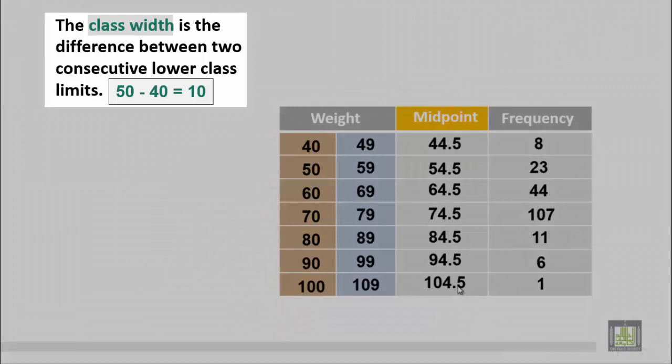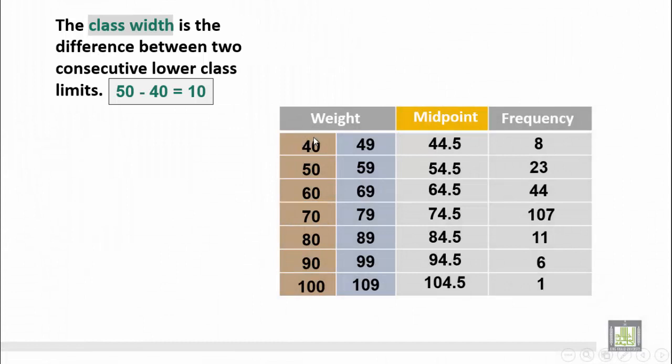The class width is the difference between two consecutive lower class limits. In this case, 50 minus 40 is 10. So the class width for this table is 10.